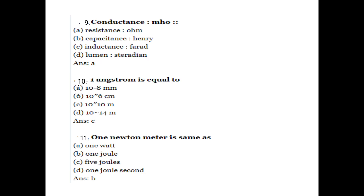The unit of conductance is mho. The unit of resistance is ohm. Second question: One angstrom is equal to 10 raised to minus 10 meters.